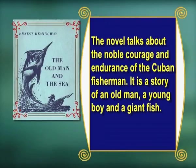The short fiction is a story of a man's struggle against the world of nature. The novel talks about the noble courage and endurance of the Cuban fisherman. It is a story of an old man, a young boy, and a giant fish. The theme of 'The Old Man and the Sea' is almost unanimously regarded as a triumph. It concerns an old Cuban fisherman who, after 84 days without catching a single fish, ventures far into the sea alone and hooks a giant marlin.